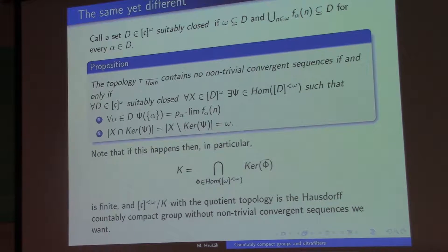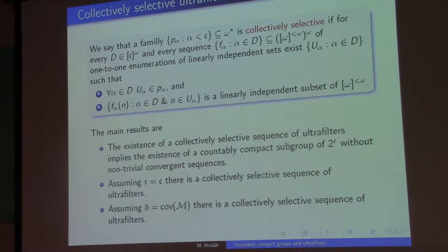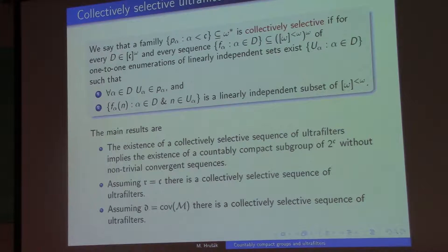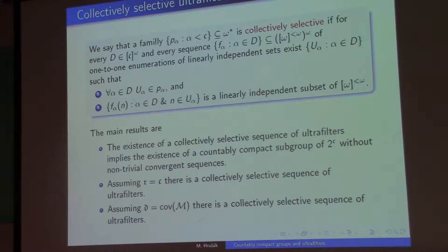But since I took a dense sequence of functions, the kernel can be only finite. So I can factor by that finite, and then I will have a Hausdorff zero-dimensional countably compact group without convergent sequences. So now, if you remember, for the p-compact case, I needed a selective, or I used a selective ultrafilter for it to work. So here I can distribute the work of selective ultrafilters among the ultrafilters that I have in my sequence.